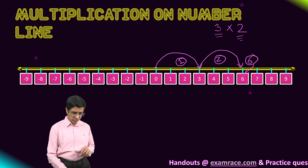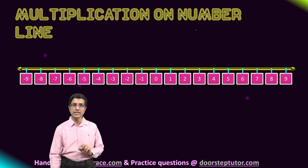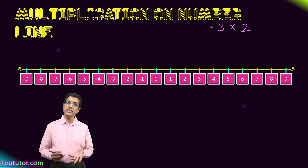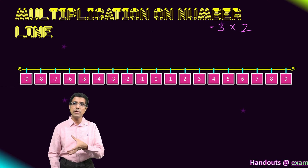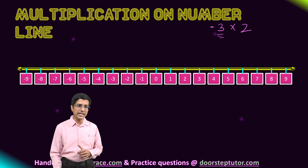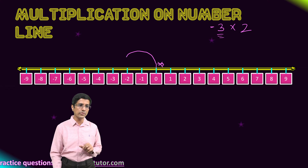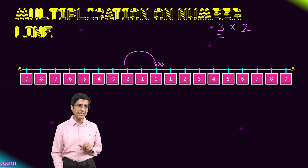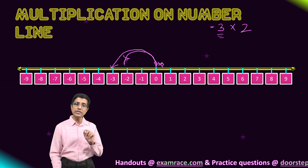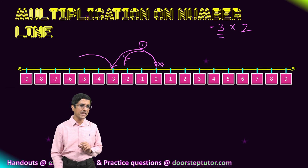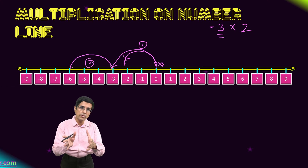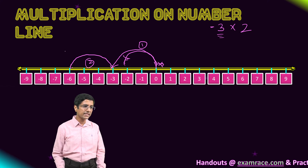Now what happens if we make a slight change to this question — instead of doing 3 into 2, we are doing minus 3 into 2. So instead of taking a jump of plus 3, I would be taking 2 jumps of minus 3. Negative jumps mean that instead of going towards the right, I go towards the left. So I will start from 0 and then go to minus 3 — this is my first jump of minus 3. Then from minus 3, I take another jump — my second jump of minus 3.